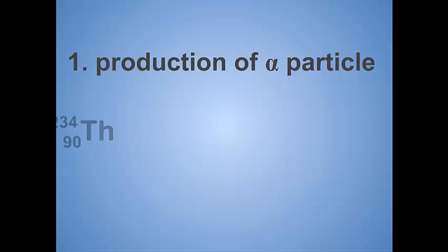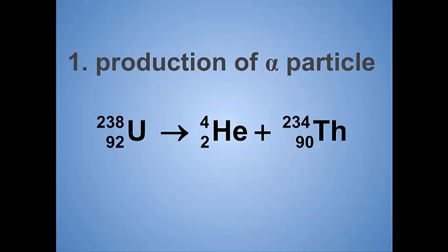So to produce an alpha particle, here is what is typically referred to as a nuclear chemistry reaction or a nuclear decay reaction. In the reactant side of this, we have an isotope of uranium, uranium-238. It has 92 protons, and if you do the subtraction of 238 minus 92, you'll have the number of neutrons. We don't really care about the number of neutrons. All we care about is the total number of particles. So, uranium-238 decays by producing an alpha particle.